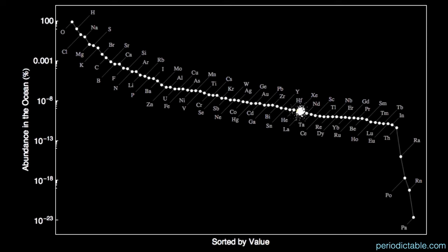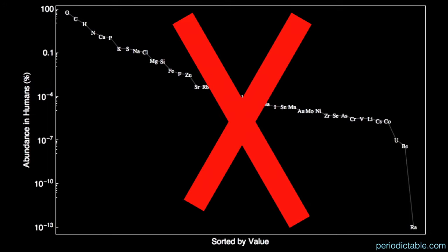In the oceans, it's the 54th most abundant element, half of a billionth of a percent. And within us, there is no xenon.